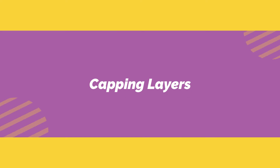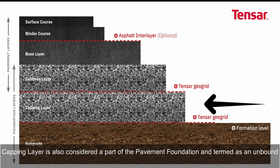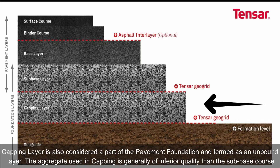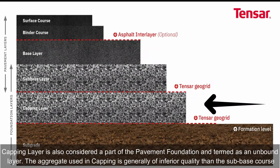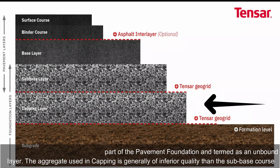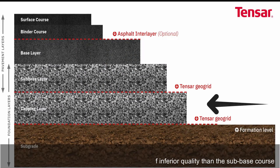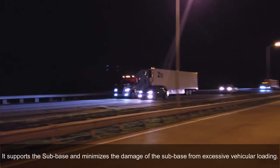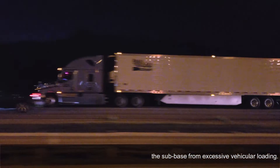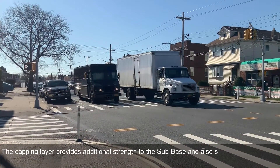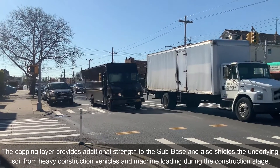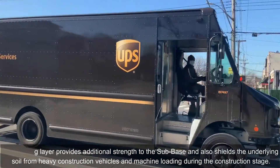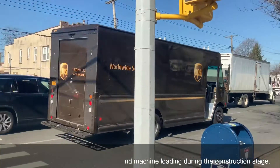The sub-base course is an unbound layer made of materials such as crushed stone, crumpled concrete, or slag. The capping layer is also considered part of the pavement foundation and is an unbound layer. The aggregate used in capping is generally of inferior quality compared to the sub-base course. It supports the sub-base, minimizes damage from excessive vehicular loading, and also shields the underlying soil from heavy construction vehicles and machinery during the construction stage.